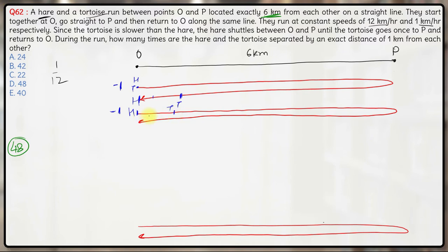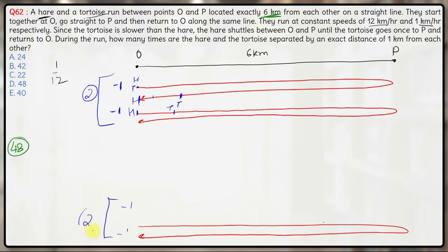Once the tortoise has moved more than 1 kilometer from O, there are no issues — every time the hare chases the tortoise, the distance will be 1 kilometer both when the hare is 1 kilometer behind and 1 kilometer ahead. The problem arises again when the tortoise comes within 1 kilometer of P, within 1 kilometer of O on return, and within 1 kilometer of O at the end — three boundary situations.